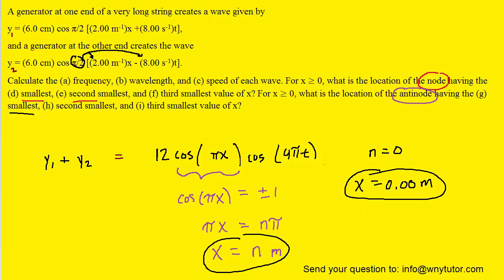When n is, we'll come over here, when n is equal to 1, that would be the next smallest. So x would equal 1 meter.